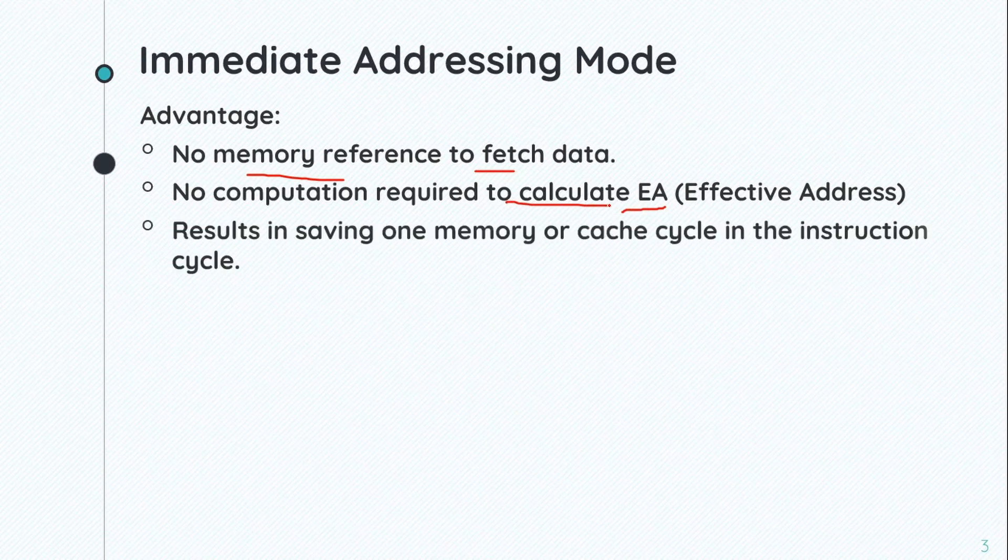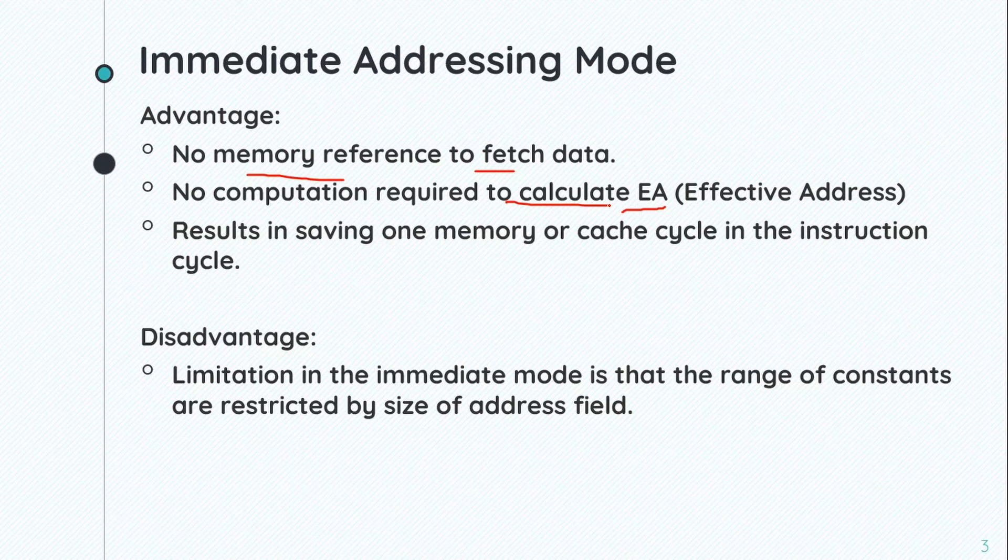Advantages: No memory reference to fetch data, no computation required to calculate effective address, and results in saving one memory or cache cycle. Disadvantage: The limitation is that the range of constants are restricted by the size of the address field.